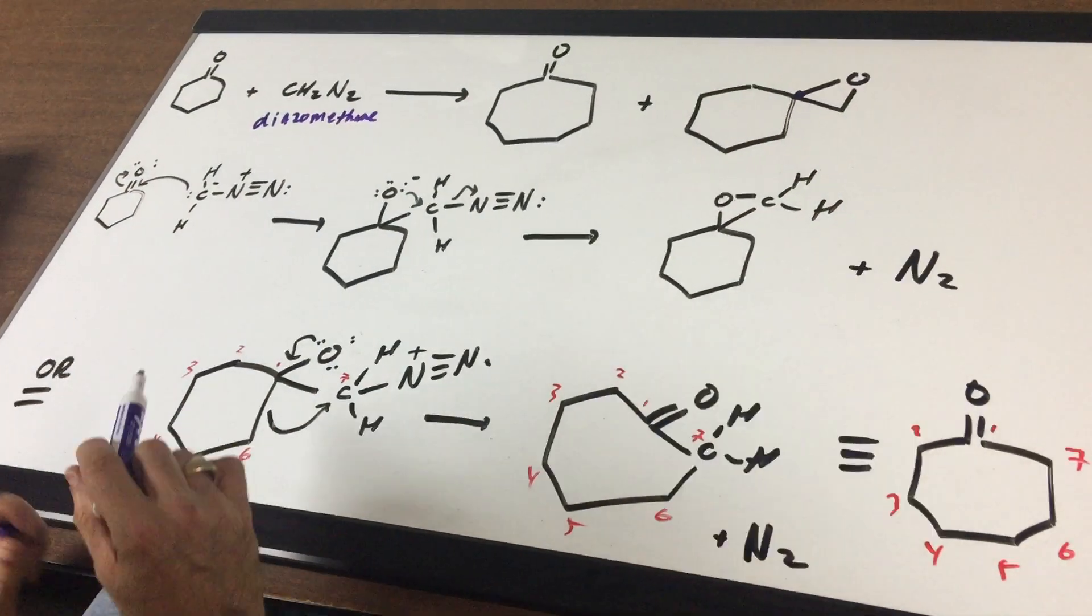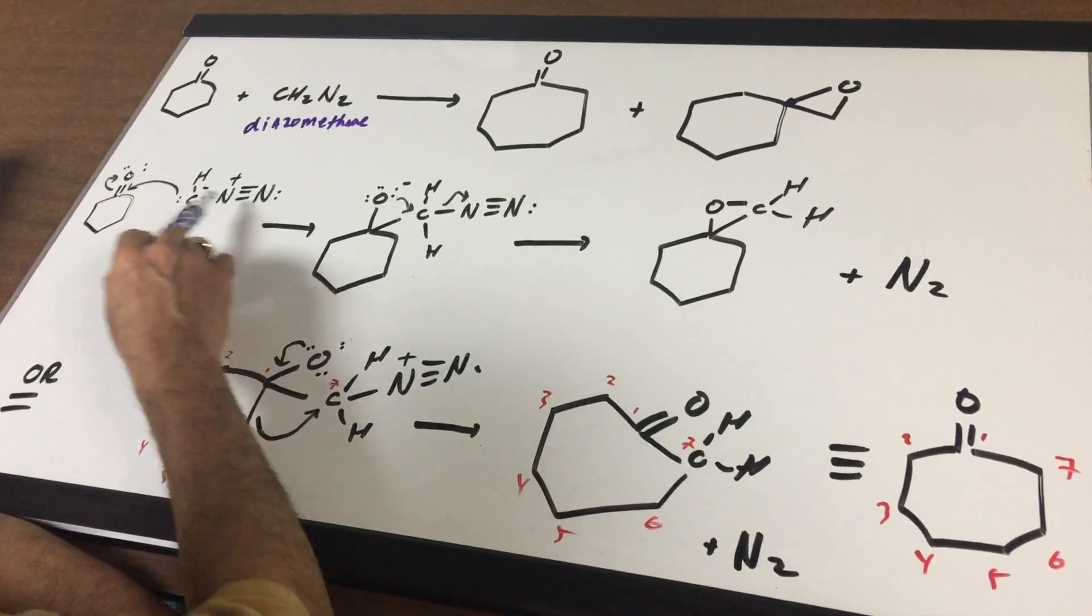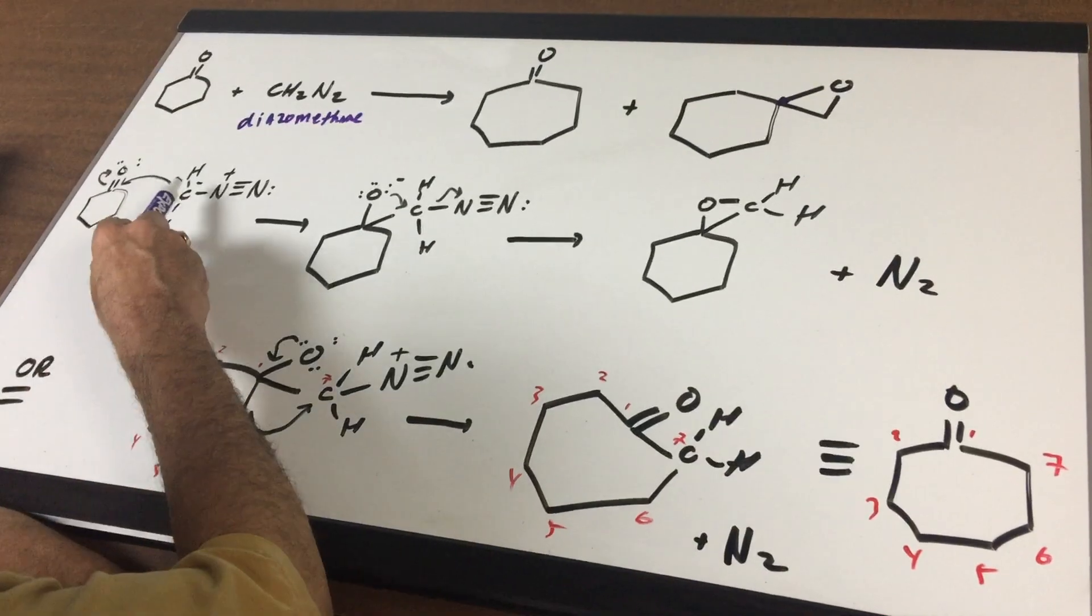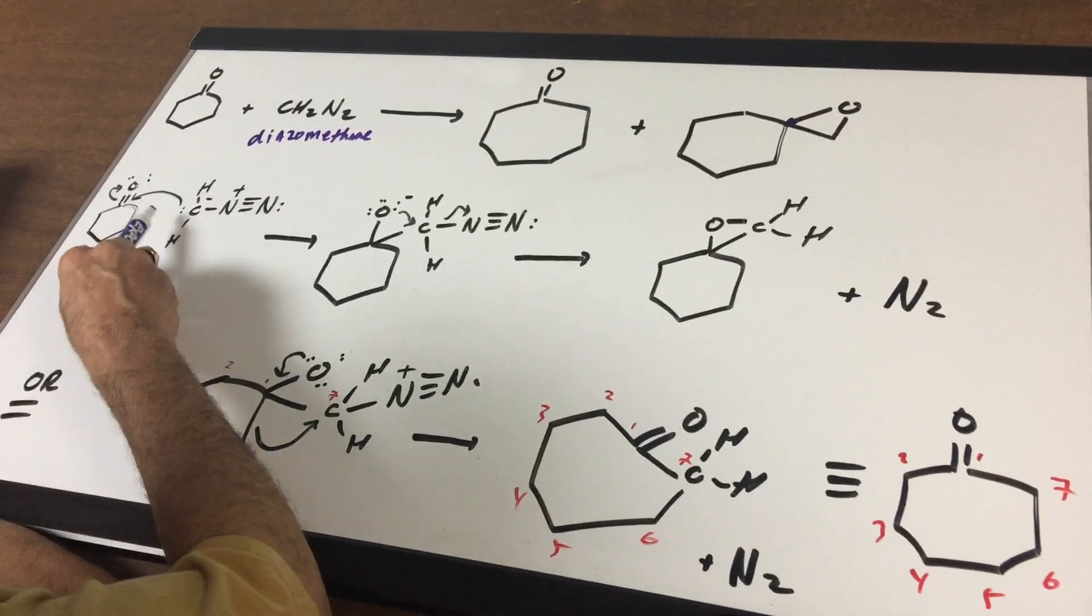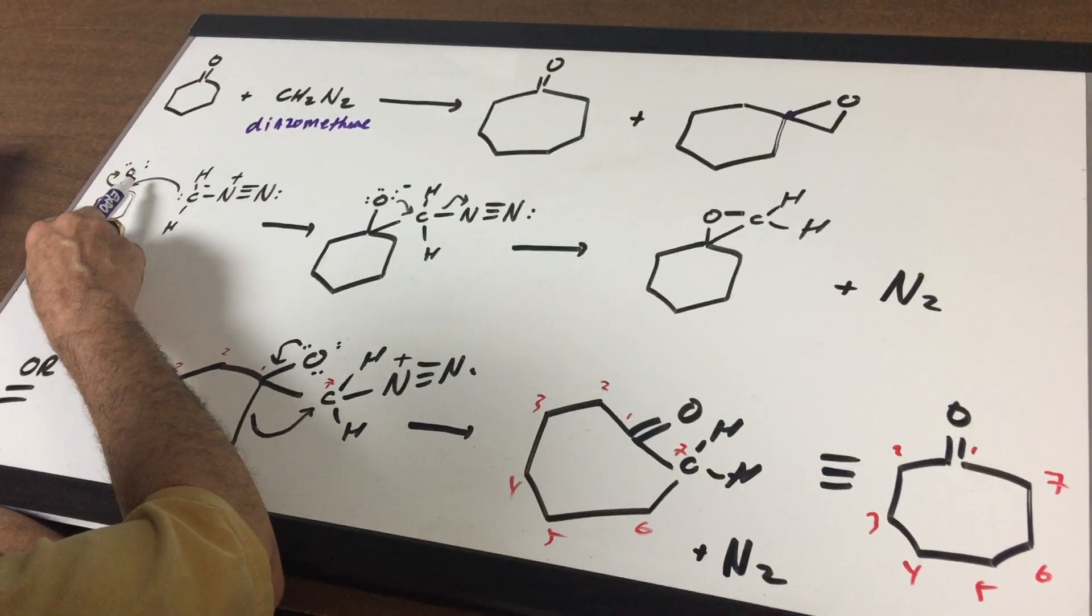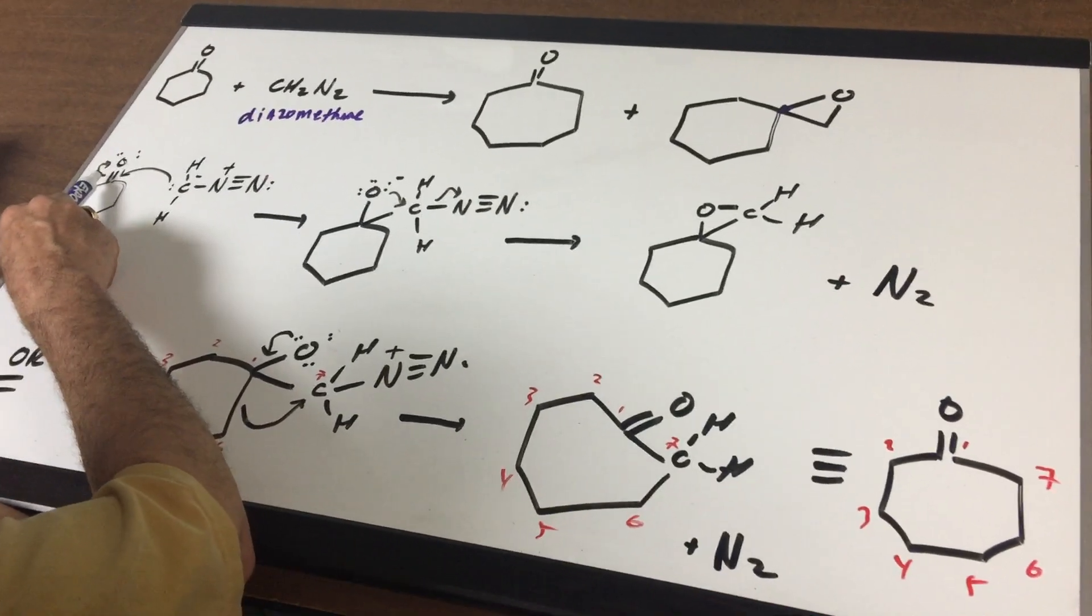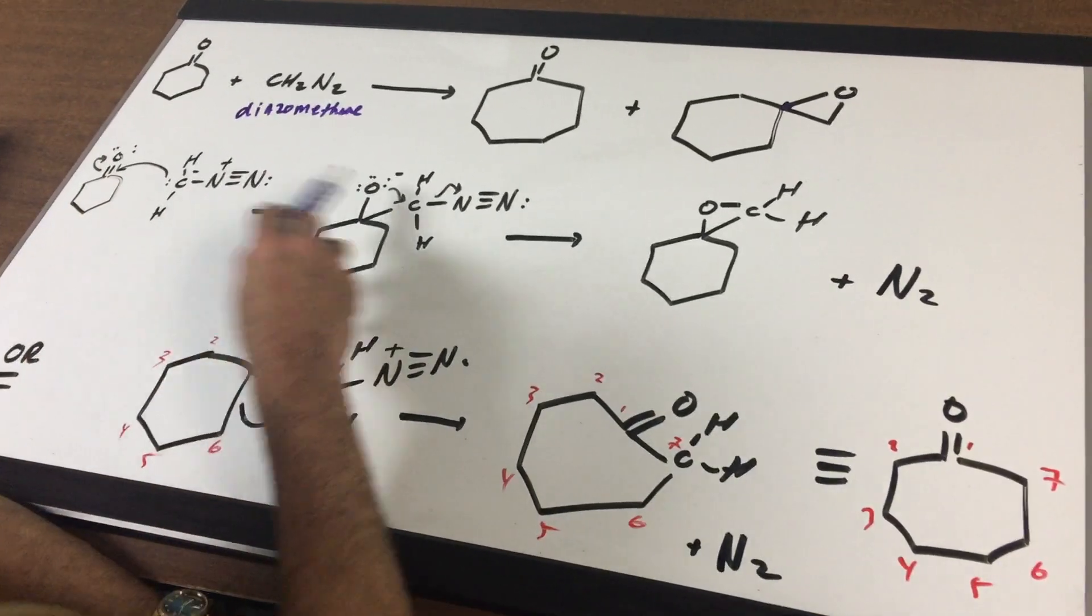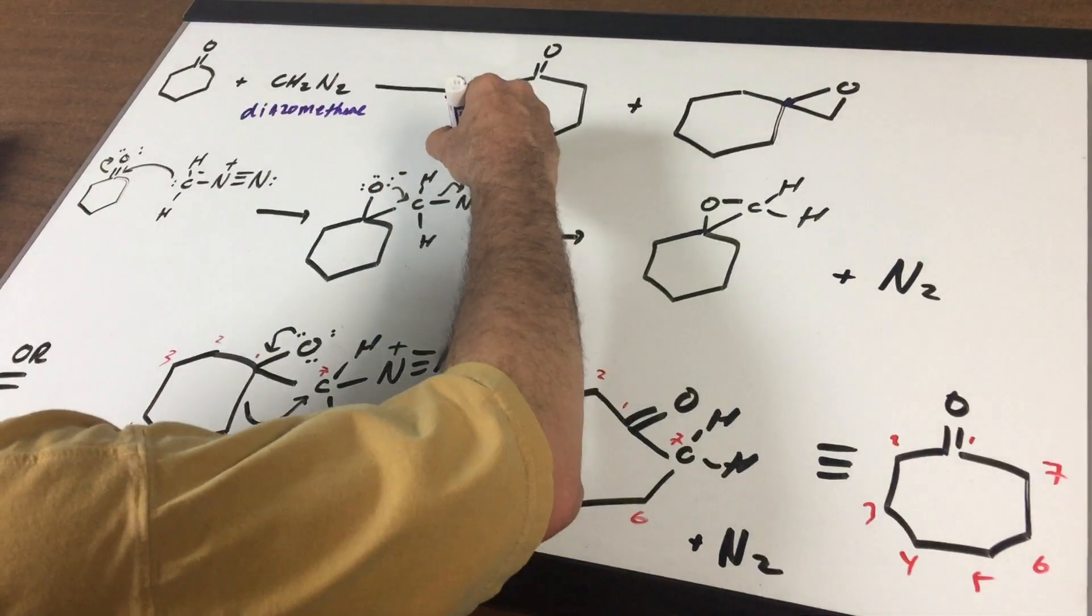Now, the first thing I do is draw out CH2N2, and this is the way it looks. If you look here, all the atoms have the octet. In the first step, the diazomethane makes a nucleophilic attack onto the carbonyl carbon, and this bond opens up. And hopefully you can see where this puts me.